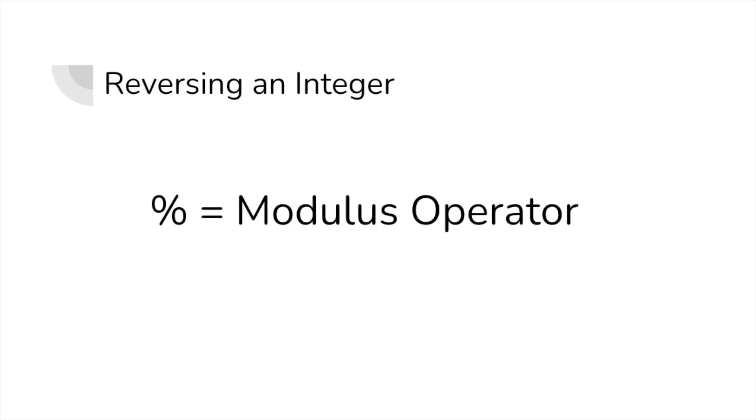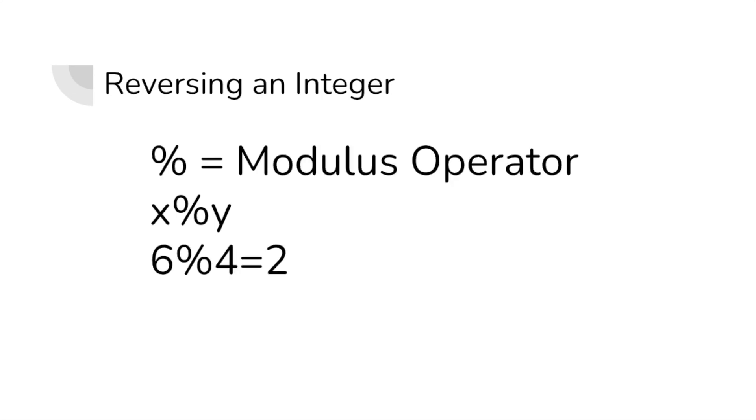To do this we're going to be using the modulus function. When you use this function in a scenario such as x mod y, you get the remainder of dividing x by y. If x was 6 and y was 4, we would get 2 as a result.